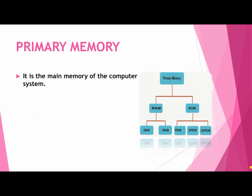Now we will discuss primary memory. Primary memory is the main memory of the computer system. As we can see in this graph, primary memory is of two types: RAM and ROM. RAM is of two types — SRAM and DRAM. And ROM is of three types — PROM, EPROM and EEPROM.